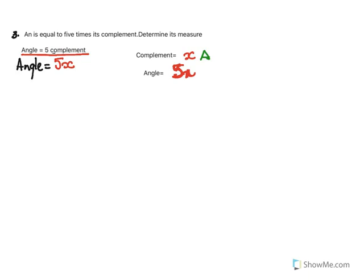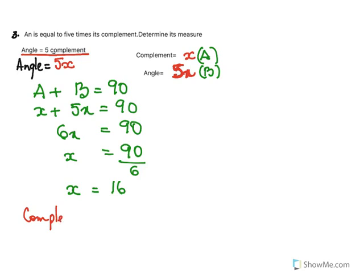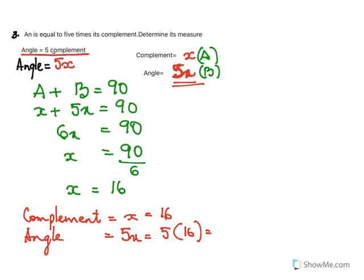The angle and its complement must add up to 90, so X plus 5X equals 90, giving us 6X equals 90, and X equals 15. Remember, our X is the complement, so the complement equals 15. The angle is 5X, which is 5 times 15, and that equals 75 degrees.